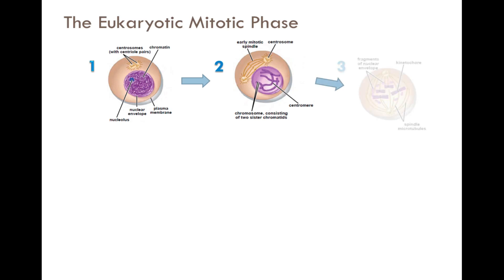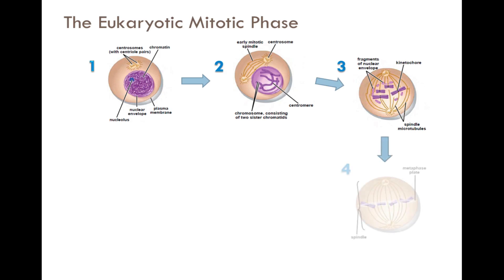Prometaphase: the nuclear envelope breaks into fragments and disappears. Microtubules extending from the centrosomes begin to reach the now highly condensed chromosomes and attach themselves at the protein structure located on the centromere called a kinetochore. Chromosomes then begin to align themselves at the center of the cell. Metaphase: the mitotic spindle is fully formed and chromosomes reside on the metaphase plate.